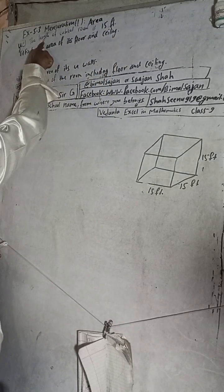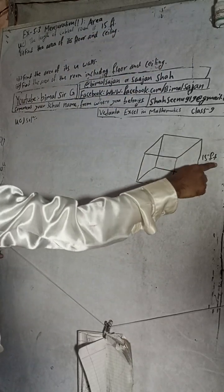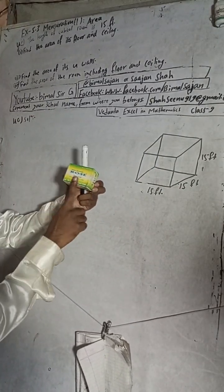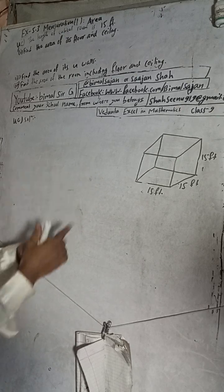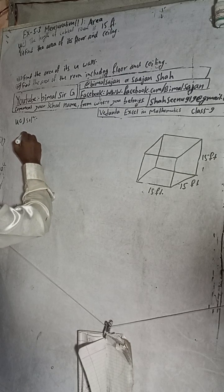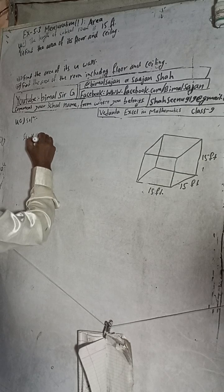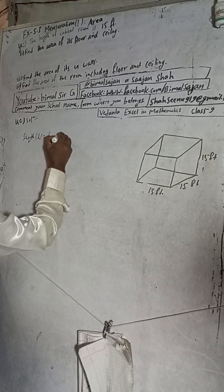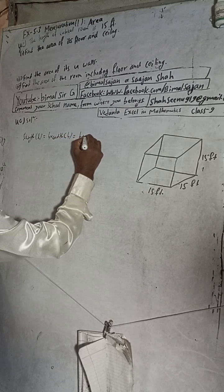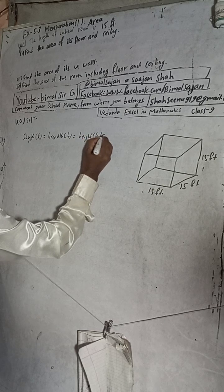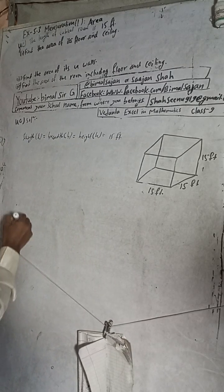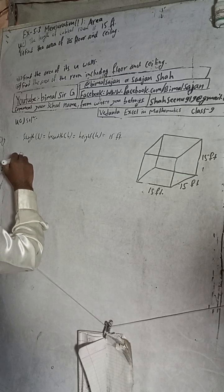The length of the cubical room is given as 15. Since it is a cubical room, the length, width, and height are all the same. So given: length L is equal to breadth B is equal to height H, all equal to 15 feet.